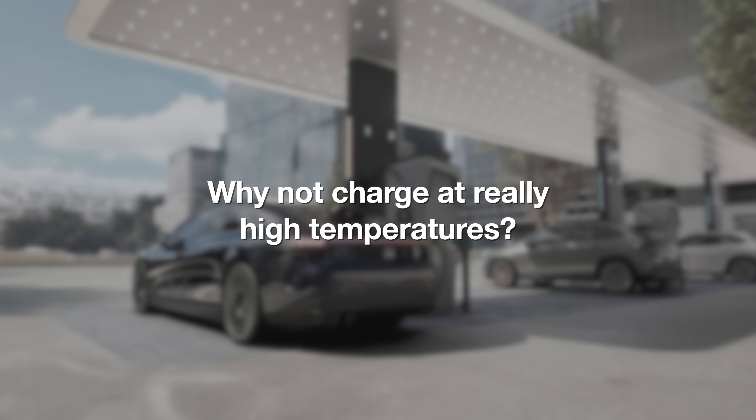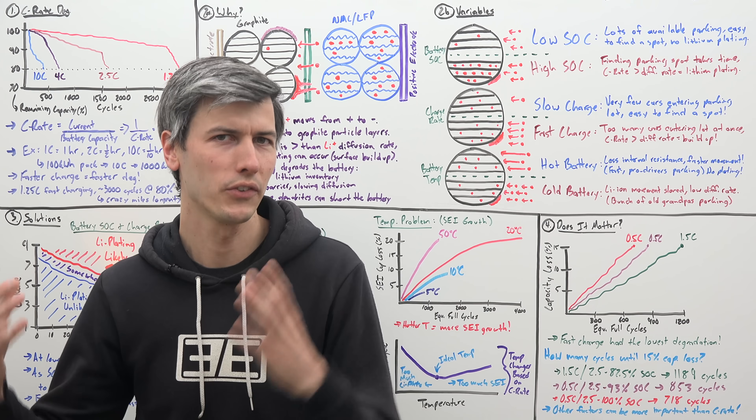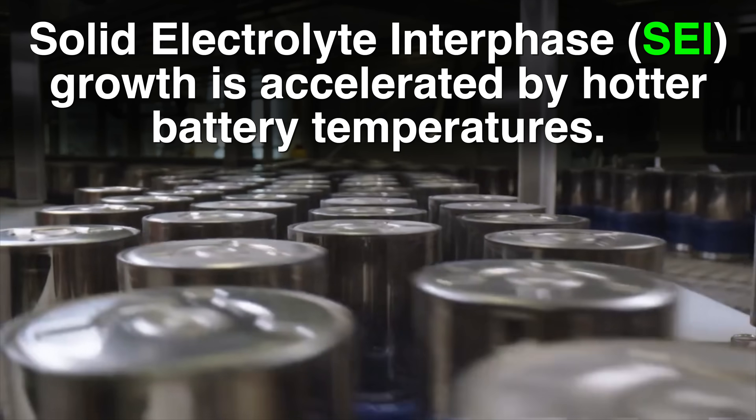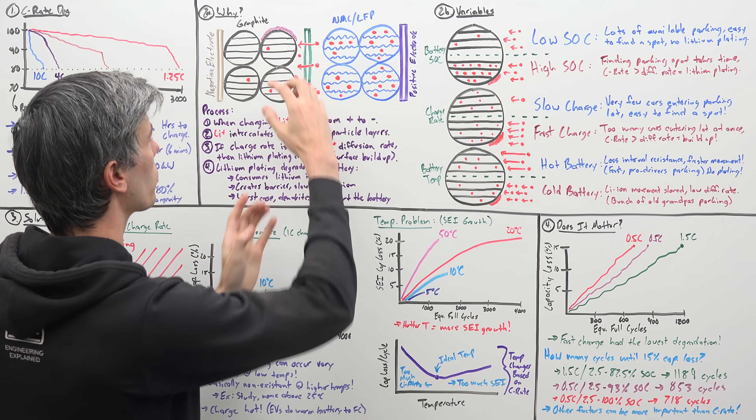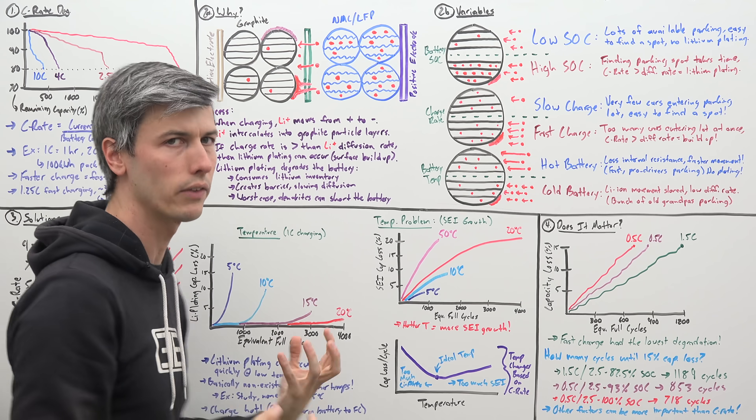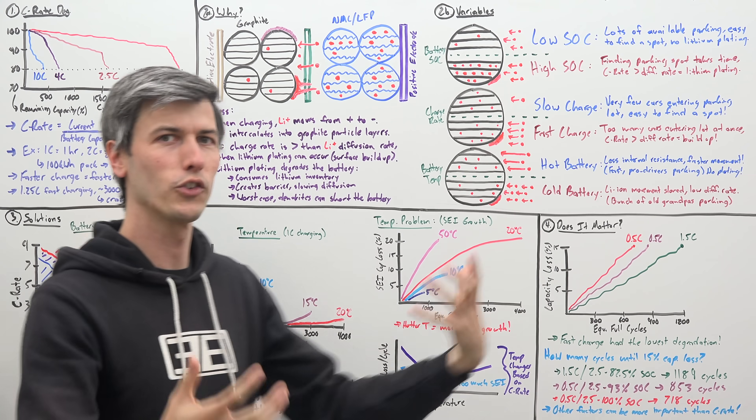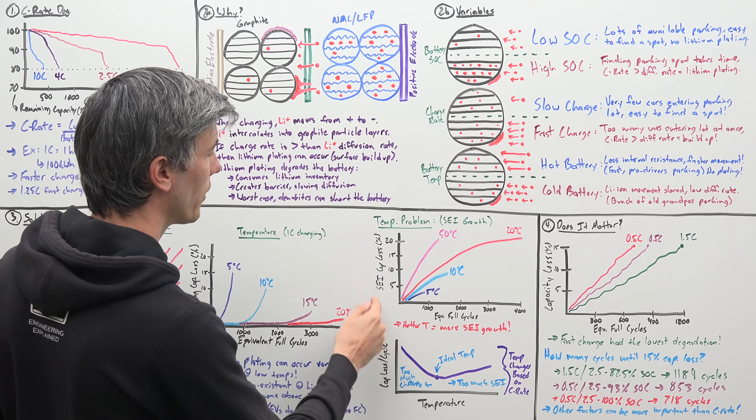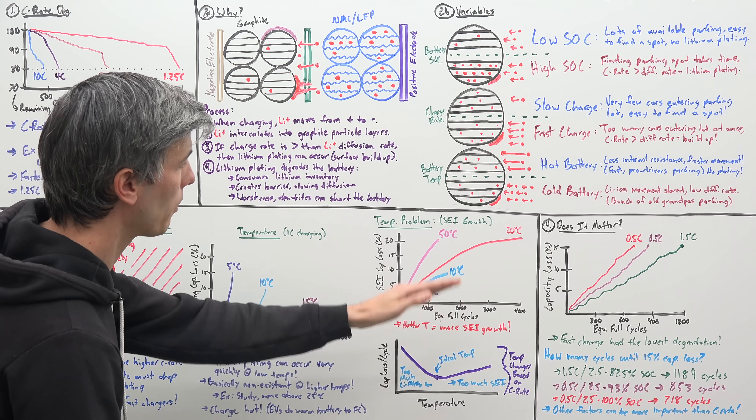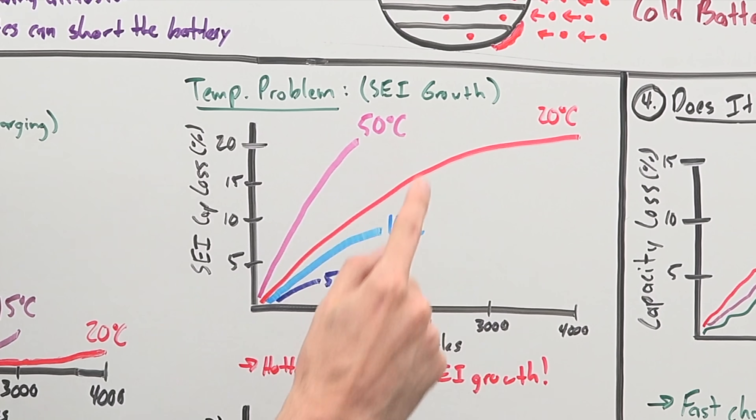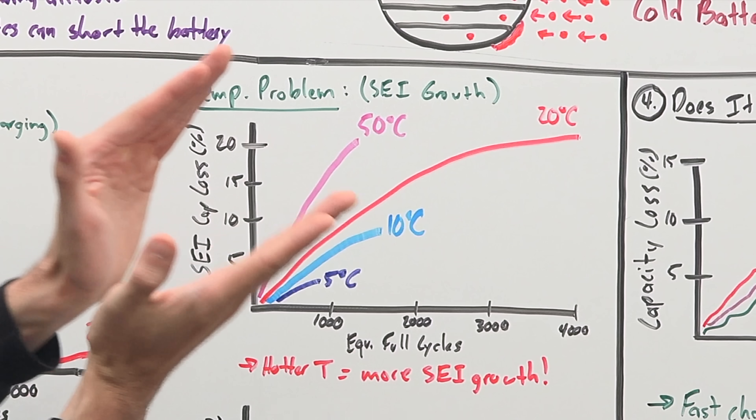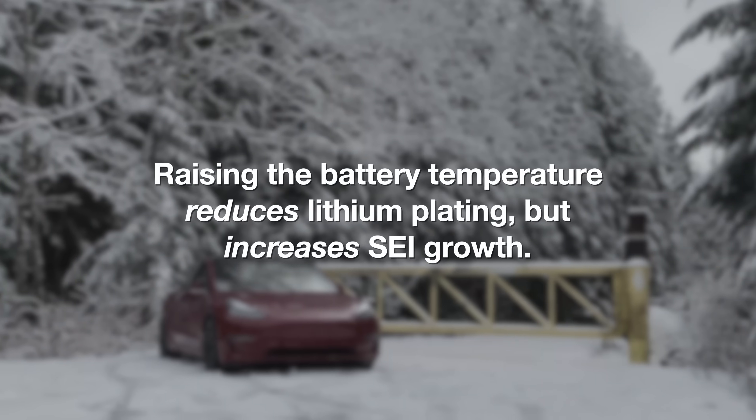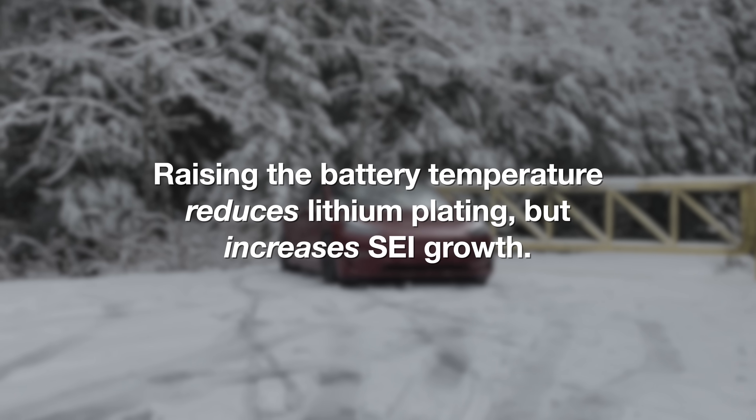But then why not just charge at really hot temperatures? Well, as you increase the battery's temperature, you start to run into another failure mode of lithium ion batteries that we haven't yet discussed, which is SEI growth. So the hotter the battery, well, then you start to have a reaction occur between these graphite particles and the electrolyte around them. And it builds up this layer on the outside of these particles that consumes lithium inventory. So as you consume that lithium inventory, of course, you have less capacity in the battery overall. So a study looked at how much capacity loss will we have from SEI as a result of operating at different temperatures? And as you can see, at 50 degrees Celsius versus 5 degrees Celsius, it's a huge difference in how quickly you have capacity loss at higher temperatures. So while raising the battery's temperature is great for eliminating lithium plating, it means you're going to have significantly more SEI growth.